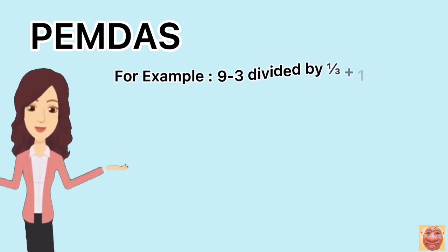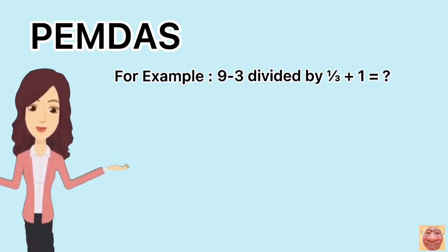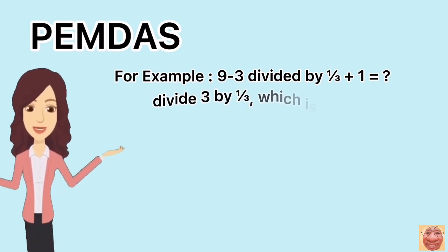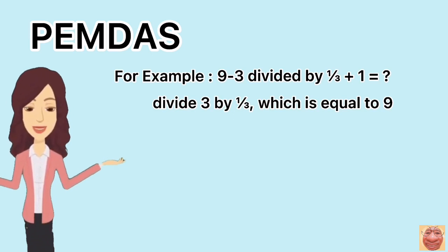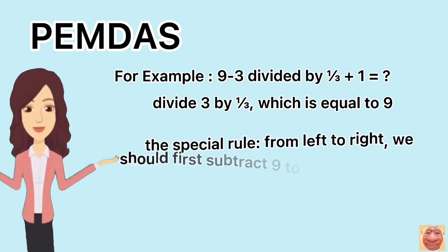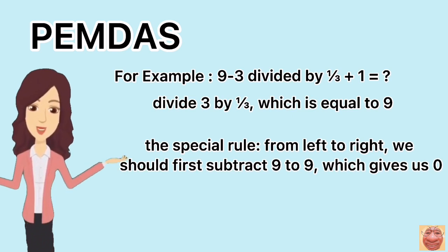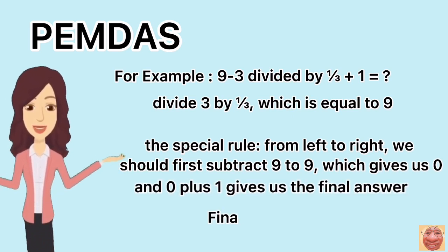For example, 9 minus 3 divided by 1/3 plus 1 equals? It might look like a tricky question at first, but we can solve this in no time. In here, we follow PEMDAS and divide 3 by 1/3, which is equal to 9. Then, following the special rule, from left to right, we should first subtract 9 from 9, which gives us 0. And 0 plus 1 gives us the final answer 1.